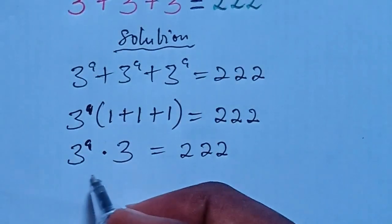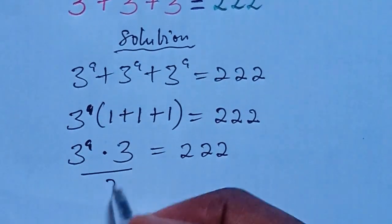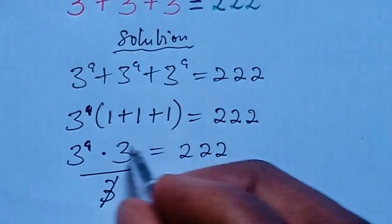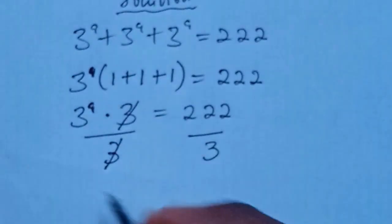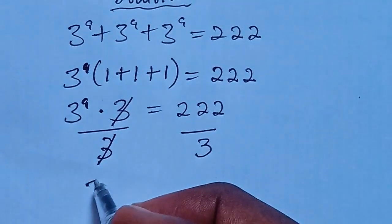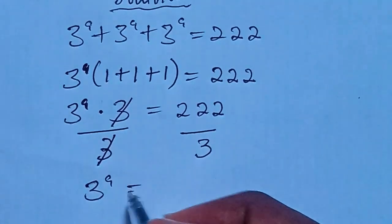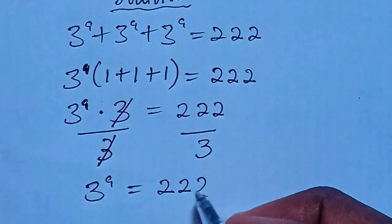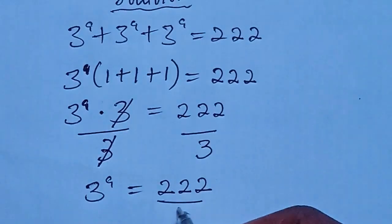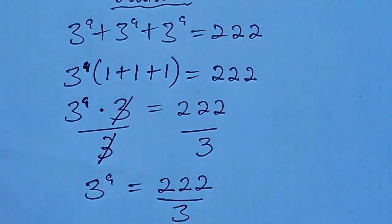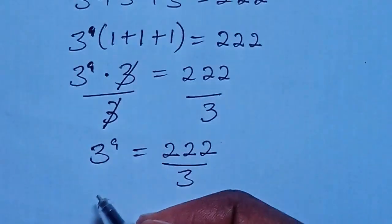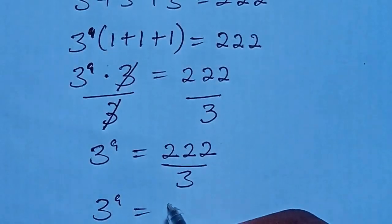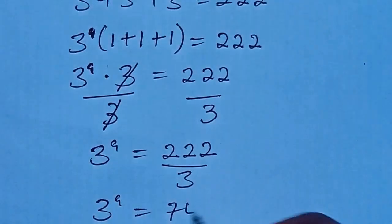Then, we can divide both sides by 3. And we are left with 3 to the power of A equal to 222 divided by 3. And if we divide that, we are going to get 3 to the power of A equal to 74.